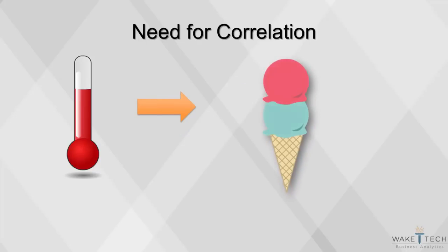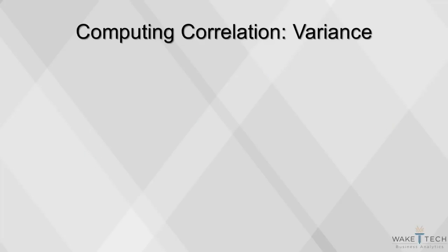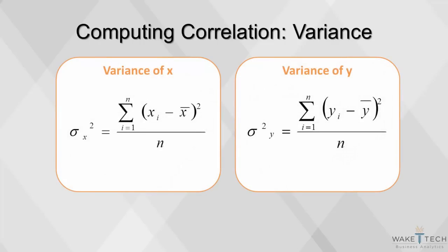What about the sale of ice cream versus temperature? What is the strength of association between them? Furthermore, how do we quantify the association? While we can guess the relationship, there's a better way to do this using statistical measures. The measure we use is the Pearson correlation coefficient.